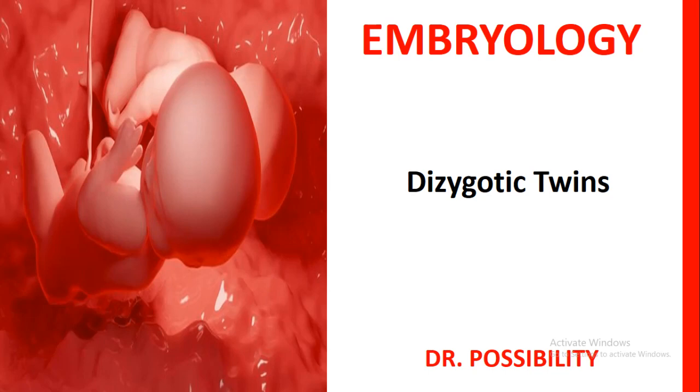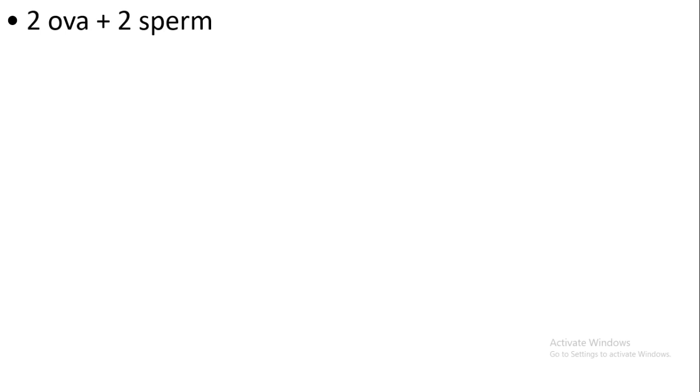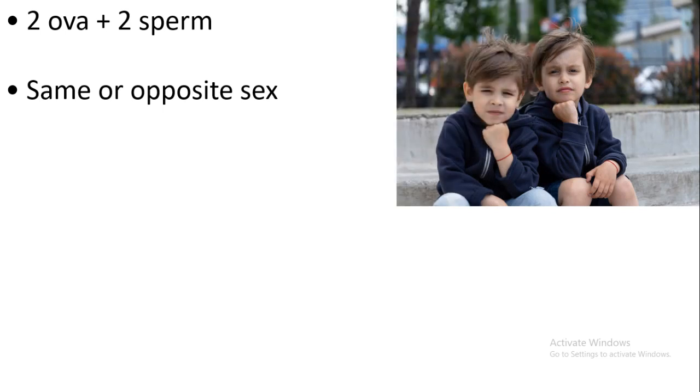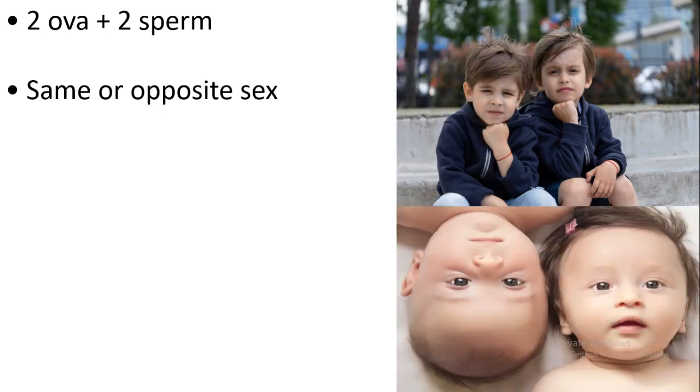In this video I'm going to focus on dizygotic twins. The following are the characteristics of dizygotic twins. Number one: dizygotic twins are formed from two oocytes — that means from two oocytes and two sperm. These twins can either have the same sex or opposite sex. For example, those two twins have the same sex, whereas the ones down have different sex.